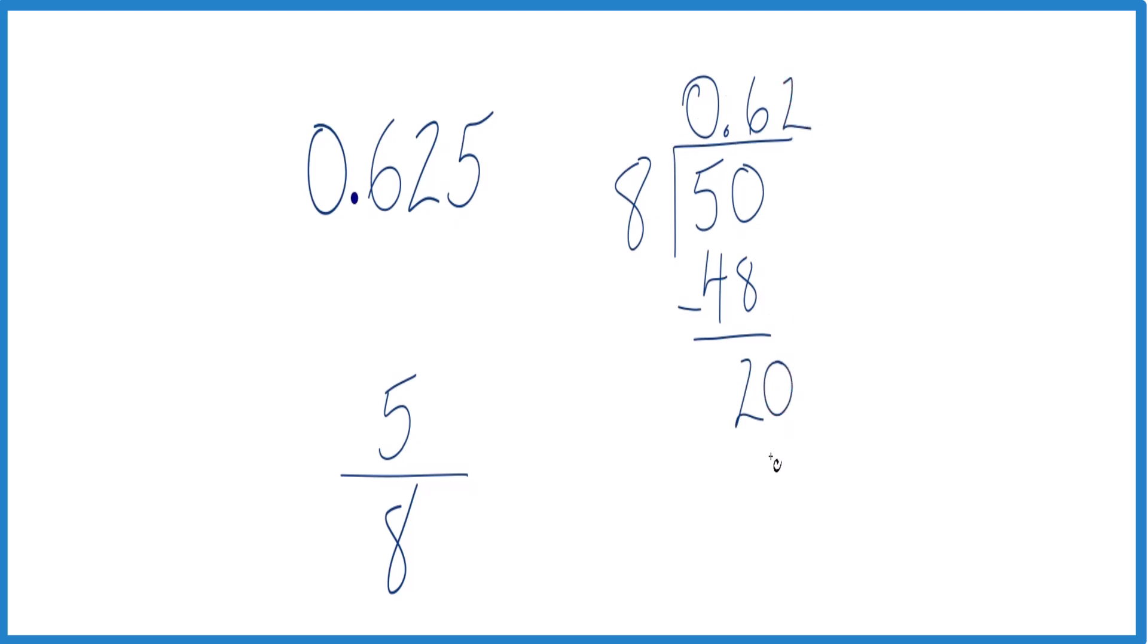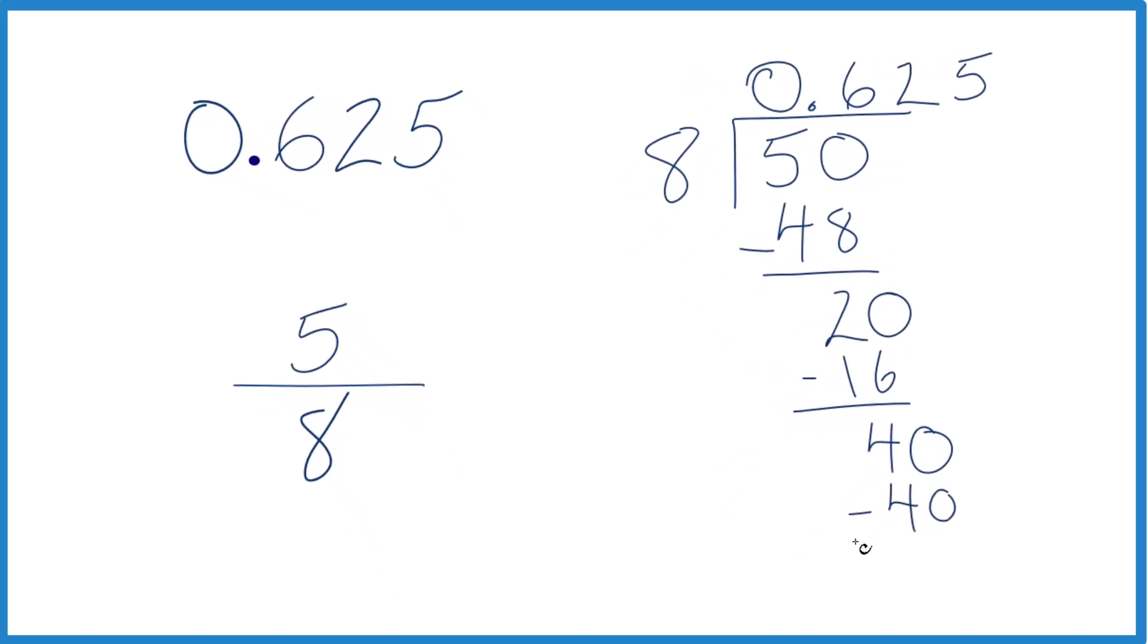2 times 8, that's 16. Subtract and we get 4. We're going to call that 40. Move over 1 and 5 times 8. That's 40. We subtract and we get 0.